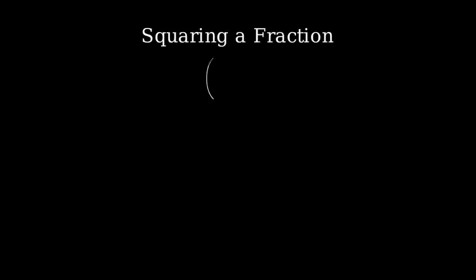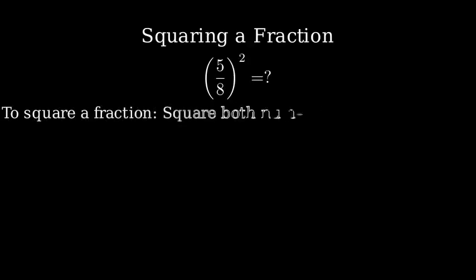Let's solve this problem step by step. We need to find what 5 eighths squared equals. When we square a fraction, we follow a simple rule: we square both the numerator and denominator separately.